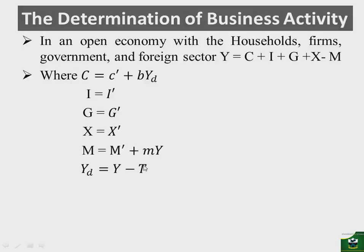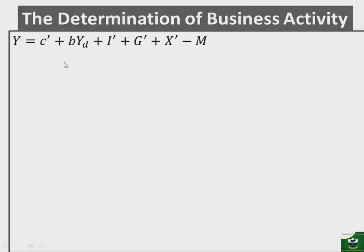Okay, so with that, then we define our YD. Our YD is equal to income minus the tax. Remember again, also here that this tax can either be lump sum, or it can be proportional tax, or both lump sum and proportional tax. So if we define this tax to be lump sum tax, then what we will have in our model is that given this equation, we can substitute YD to income minus the tax, and we can also substitute all these with their respective autonomous values, and the import we substituted with M prime plus MY.